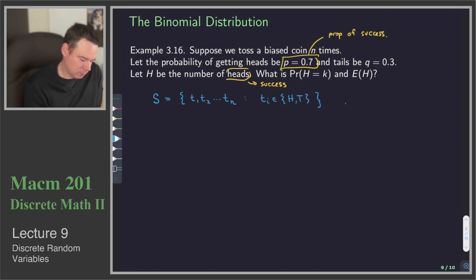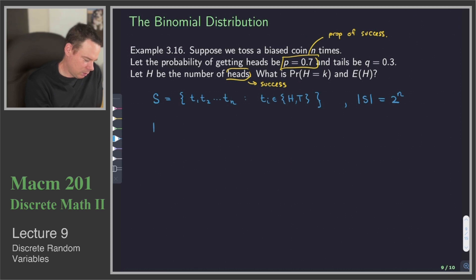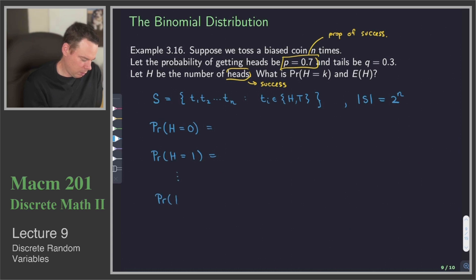So how big is our sample space? There are two choices for each coin flip and we do it n times, so the size of our sample space is 2 to the n. What are we interested in? We want to know the expected number of heads, and in particular, to get that we need to know the probability of a certain number of heads appearing — the probability that the number of heads is 0, then 1, and so on down to k.